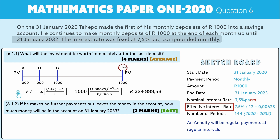He leaves the money — doesn't take it out — but lets it grow for another 12 months. On the timeline, in red, this is plus 12 months from the last payment, which would be month 156. But we work with the fact that it was in the account for 12 months. This is no longer an annuity.